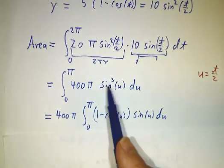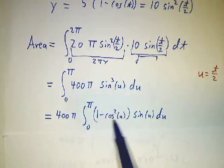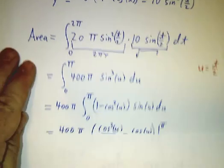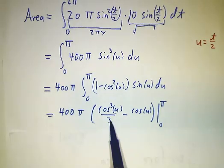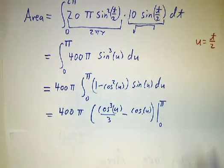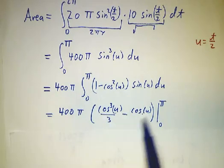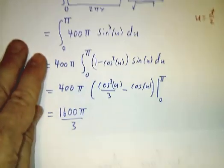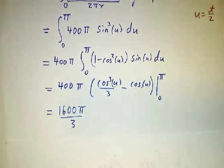We turn the sin² into 1-cos². And then that just becomes cos³/3 - cos, evaluated at 0 to π. This gives us 4/3. 4/3 times 400 is 1600/3 all times π. So that is the surface area of the surface of revolution.